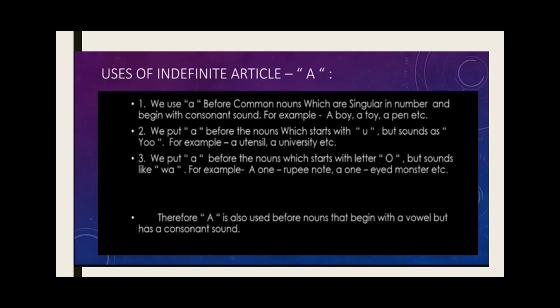The first use of 'a' is that we use it before common nouns which are singular in number and begin with a consonant sound. For example: a boy, a toy, a pen, etc. This means that if a noun starts with a consonant letter and is also singular in number, then you have to put 'a' before it.